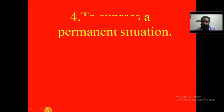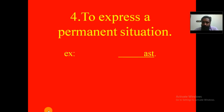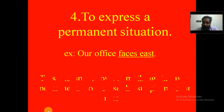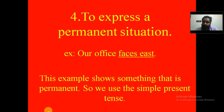We use the simple present tense to express a permanent situation — something which is not going to be changed. Take the example: 'Our office faces east.' This shows a permanent situation, so we use the simple present tense.